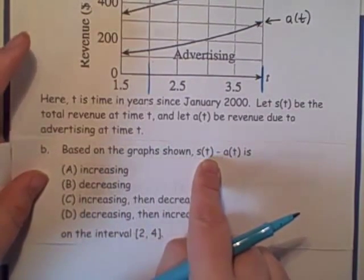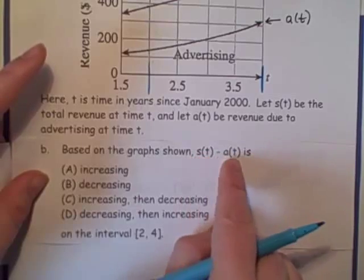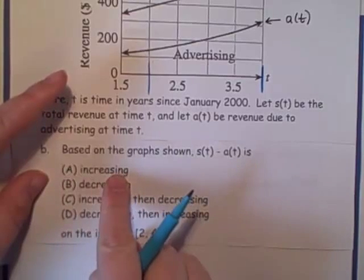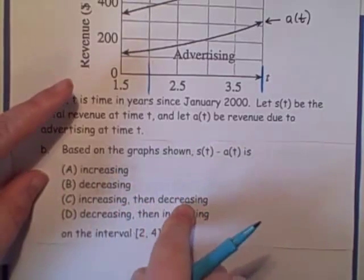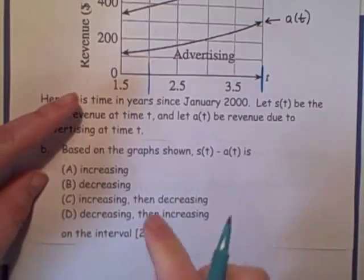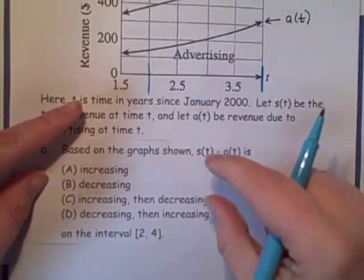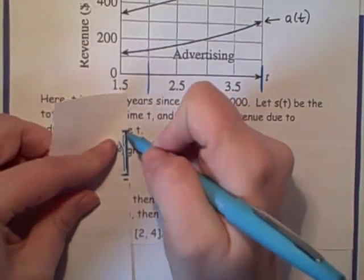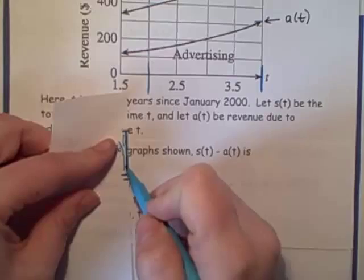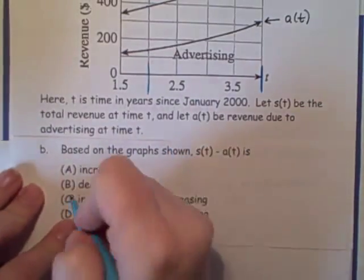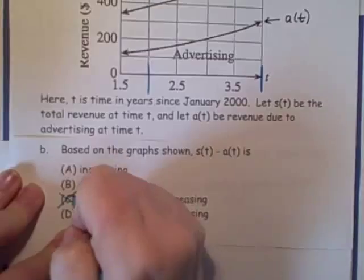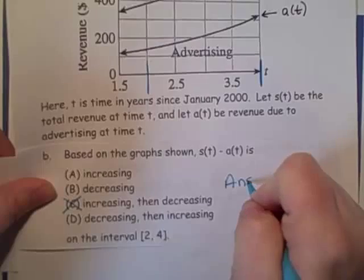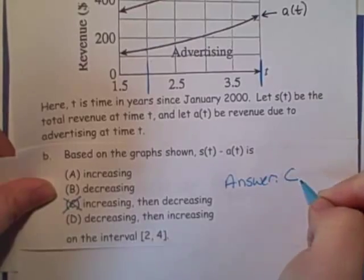So, let's look at the problem again. Based on the graph shown, the distance between s(t) minus a(t), that's the vertical distance, is increasing, decreasing, increasing then decreasing, or decreasing then increasing. So remember, we started out at that small amount. We started out at this distance, and then it got a little bit bigger, and then it went back to where it started from. So I think that what's happening is it's increasing, then decreasing. So our answer is c.